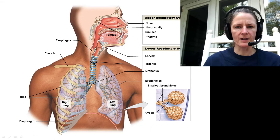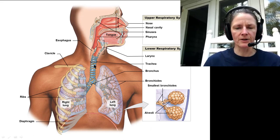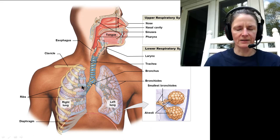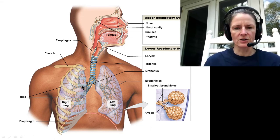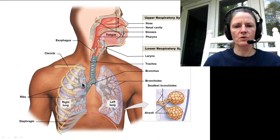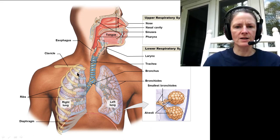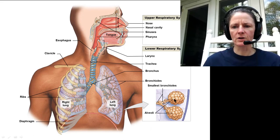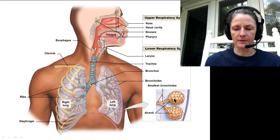Once we get back into the trachea, we have pseudostratified ciliated columnar epithelium again. In the smaller conducting passageways, this epithelium changes to simple cuboidal. And when we get into the alveoli themselves, it becomes simple squamous.